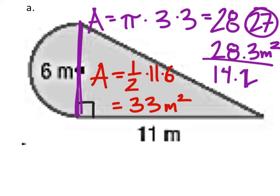I mean, if we want to, we can use 14.2. It's not going to make that big of a difference here. So now we're just going to add that area of the semicircle to the area of that triangle. So that's 14.2 plus 33. That gives us 47.2 square meters.